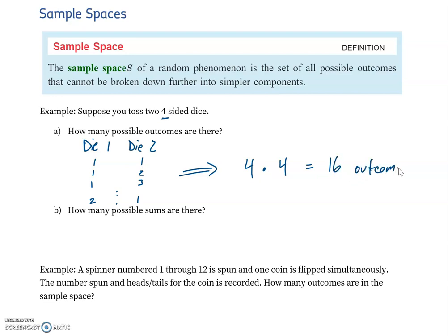So that is the size of our sample space. The sample space itself is going to be the collection of all of these combinations: one and one, one and two, one and three, et cetera. So all of those combinations together make the actual sample space. The sample space is the set of all outcomes. Here we're just asked how many outcomes—basically how big is that sample space?